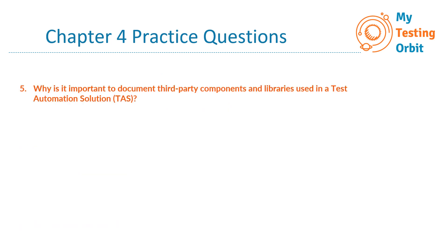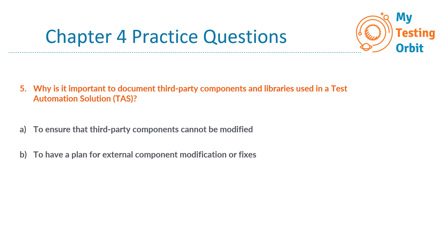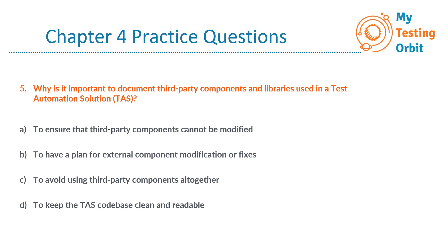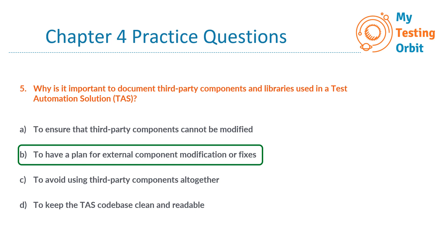Question 5: Why is it important to document third-party components and libraries used in a TAS? Option A. To ensure that third-party components cannot be modified. B. To have a plan for external component modification or fixes. Or D. To keep the TAS code base clean and readable. The correct answer is B. It is necessary to have a plan in case external components need to be modified or fixed. Documentation of third-party components and libraries is crucial to know who to contact or where to submit an issue, ensuring a proactive strategy to address issues and reducing the risk of disruption in TAS operation.